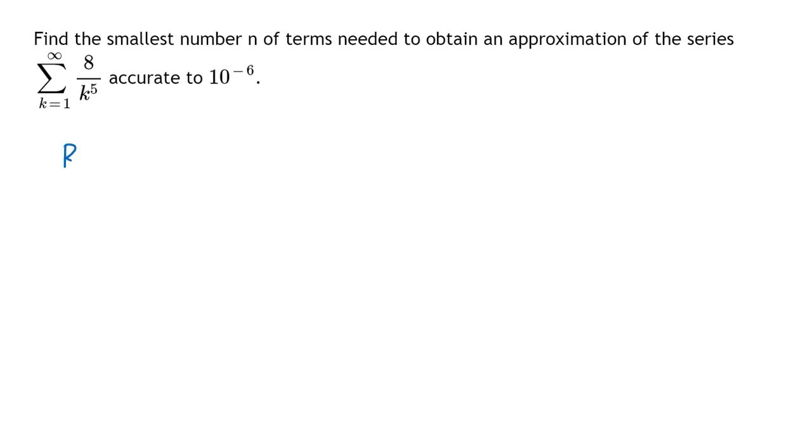So we're still going to use our formula r sub n is less than the integral from n to infinity of f of x dx, but this time N is unknown, but what we want is for this to be less than 10 to the minus 6. So in other words, we're going to make that integral happen, that that inequality happen, and that will cause our remainder, which we want, to be less than 10 to the minus 6.